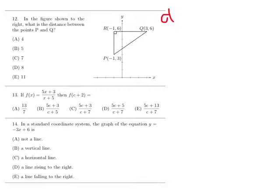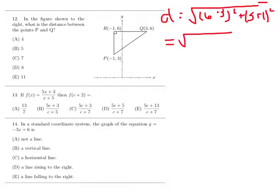For number 12, you need the distance formula, which is the square root of x minus x. So let's do 6 minus 3, quantity squared, plus y minus y. So 3 minus negative 1 squared. So what is that? 3 squared is 9. 3 minus negative 1 is 4. That's the square root of 25, which gives you 5.